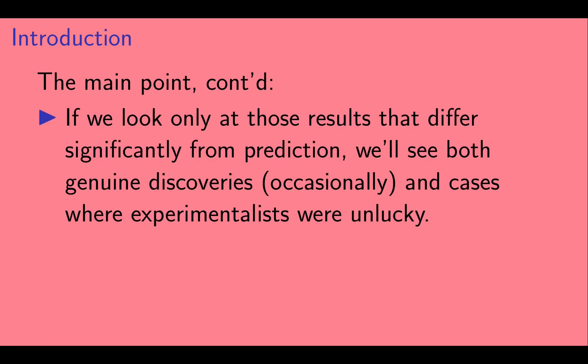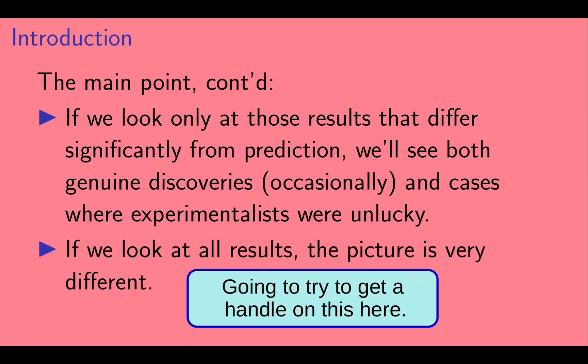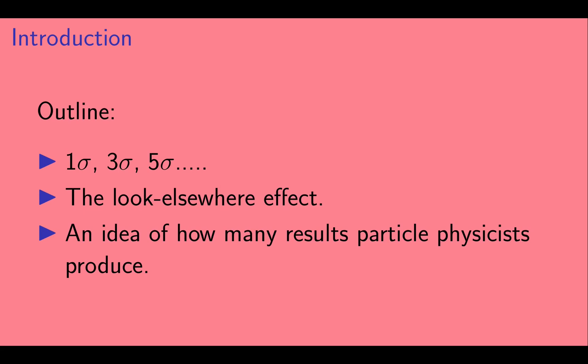So if we only see those results that differ significantly from prediction, we'll see both the occasional genuine discovery and cases where experimentalists were unlucky. If instead we look at the body of all experimental results, we'll see a very different picture. So let's try to get a handle on this here. Okay, so here's an outline of what this video is about. First, we'll talk about sigmas, which is how particle physicists usually quantify the difference between an experimental result and a theoretical prediction. Then we'll talk about the look-elsewhere effect. And finally, we'll try to get an idea of how many results particle physicists produce in a year.